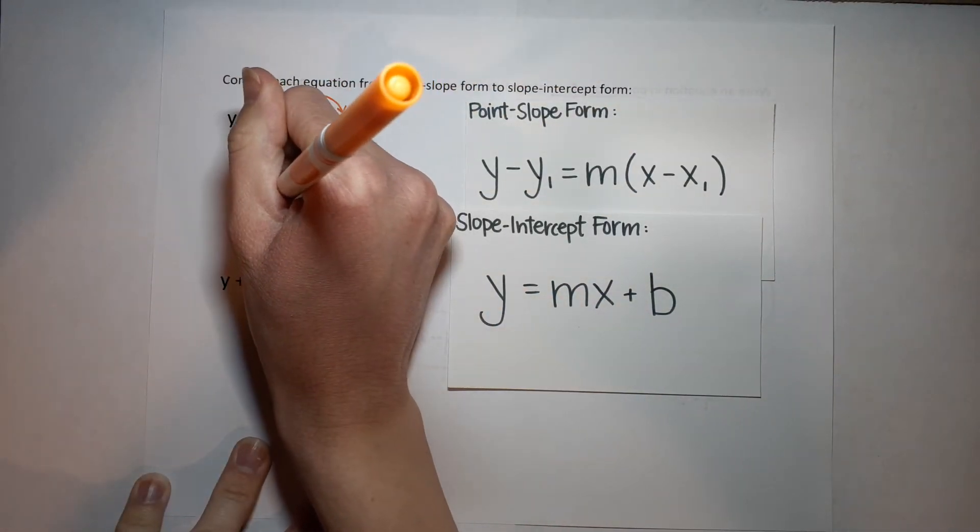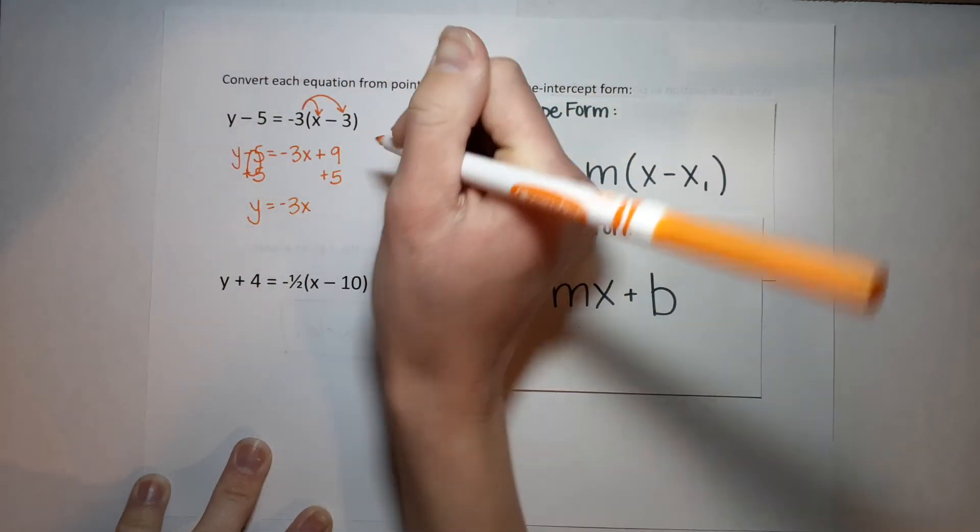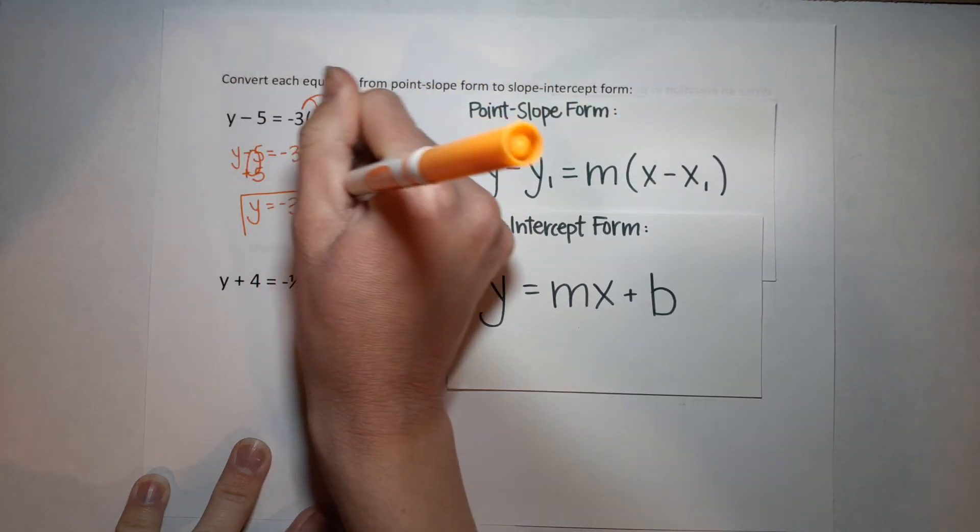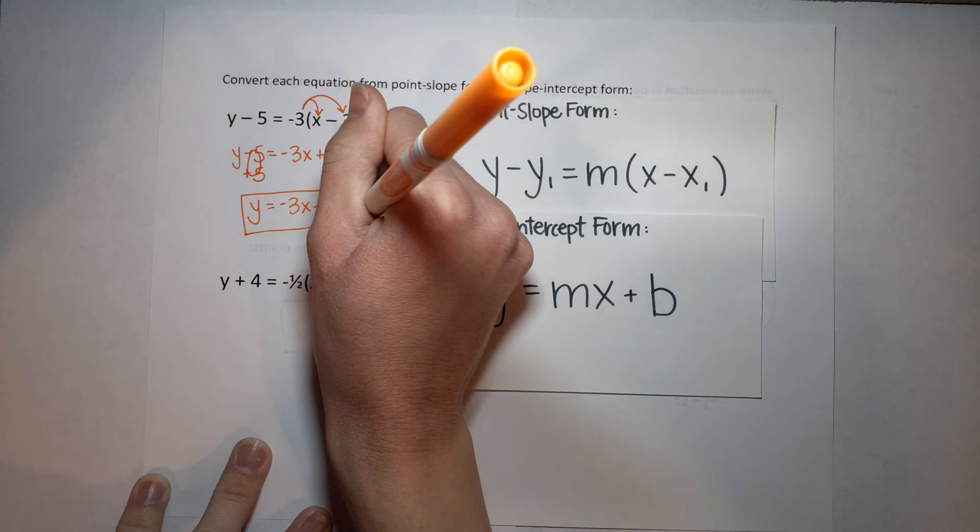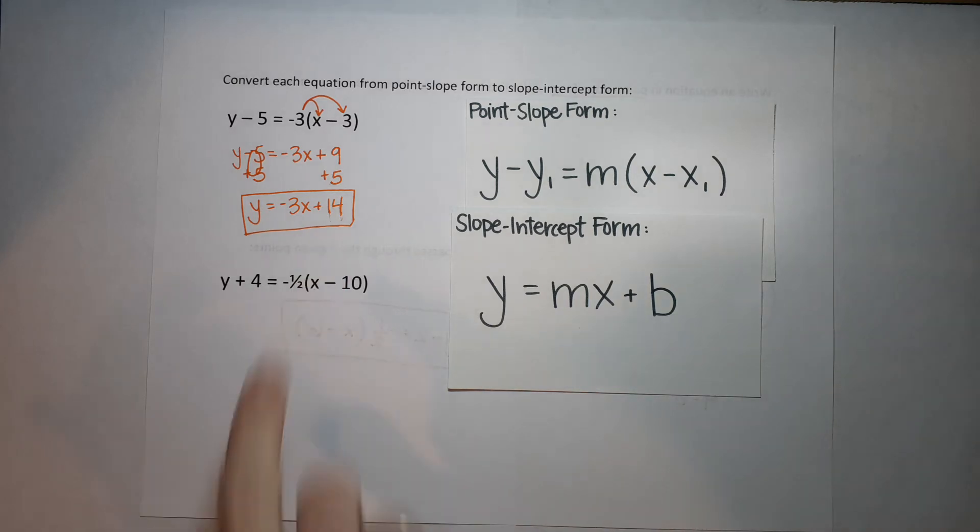There is 0. So I'm left over here with y equals negative 3x, 9 plus 5 is 14, and guess what? That is now in slope-intercept form. Not too bad, right? Now I could graph that pretty easily.